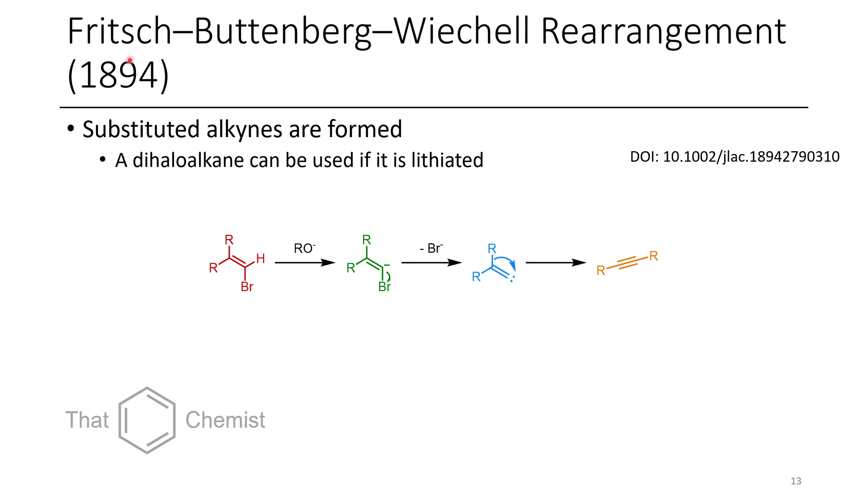Now a different reaction is the Fritsch-Buttenberg-Wiechell rearrangement, which is a little bit like the Corey-Fuchs, which we're going to talk about in a minute. Now in this case, we'll end up with a di-substituted alkyne as our product, also known as an internal alkyne. And so what occurs is either if we have one halide and one hydrogen, a base is going to deprotonate that position. However, if we have two halides, we can lithiate using a base such as n-BuLi, which is just going to lithiate that to the same kind of intermediate. Then this goes through a carbene intermediate, and through a 1,2 shift, we're afforded with our alkyne.